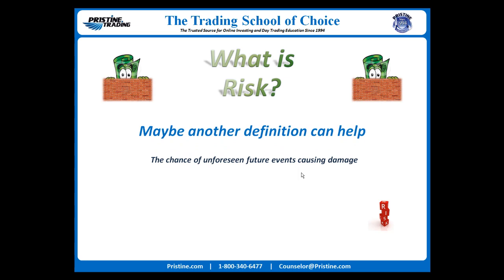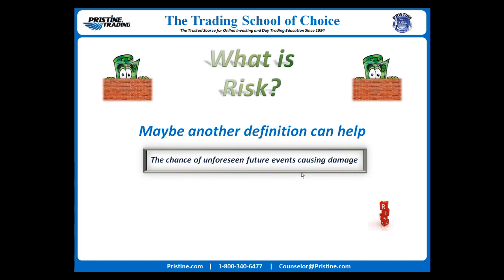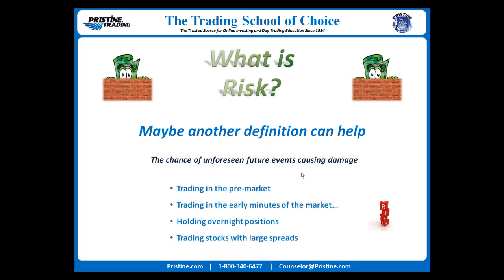There's another definition of risk where it is defined as the chance of unforeseen future events causing damage. This one might be helpful. If you trade with a fixed risk amount, are there other events that could cause you to exceed that risk amount? There are certain unforeseen things in trading that can make you exceed the expected loss — things such as trading in the pre-market or early part of the day, or holding positions overnight. These can lead to unexpected losses that exceed the amount you intended to lose. Likewise, trading stocks that are illiquid or have large spreads can also cause greater than expected losses on exit.